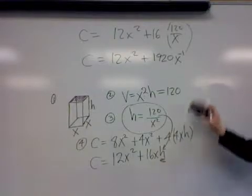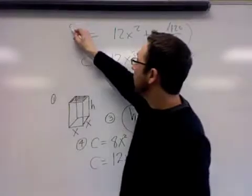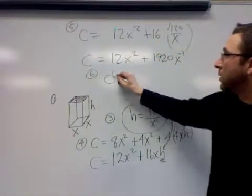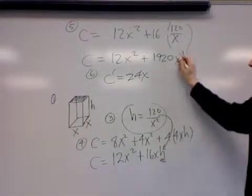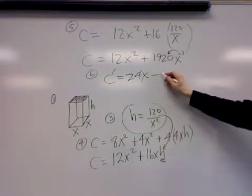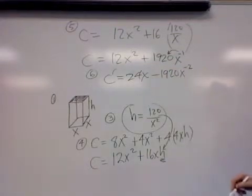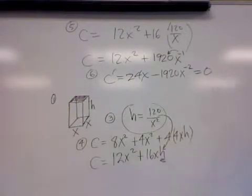You'd want to do that because the next step, step six, is to find the derivative of the cost, which would be 24x using that power rule, negative 1920x to the negative two. You're going to take that derivative and set it equal to zero and solve from there.